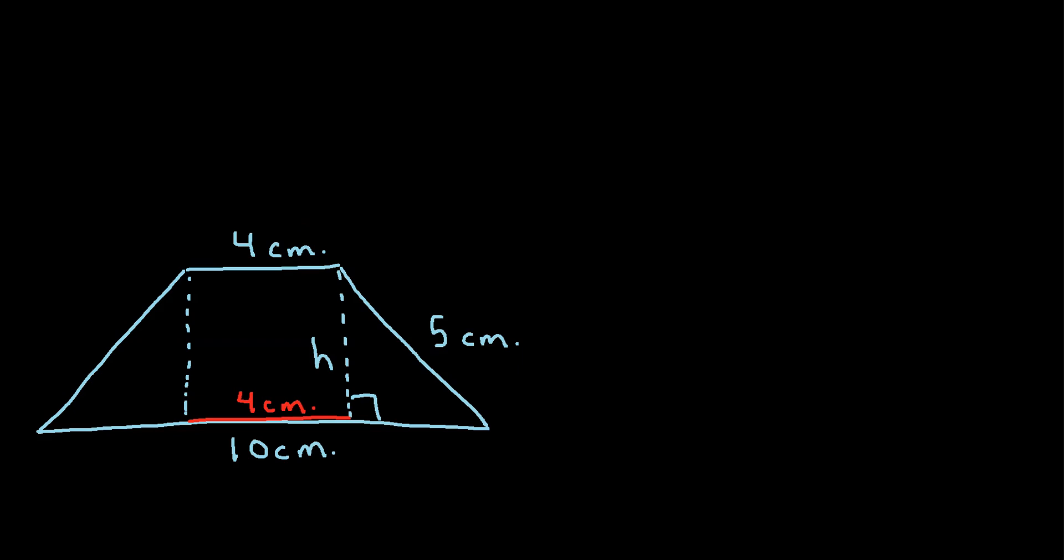And let's say we're also told that this is an isosceles trapezoid, meaning if we split it perfectly down the middle both sides are perfectly symmetrical. So what that tells us is that this distance right here, if we call it x, must also be equal to this distance right here, which is also x. And we know that the whole length of this base is 10 cm. So we just need to figure out what is x.